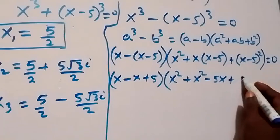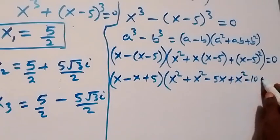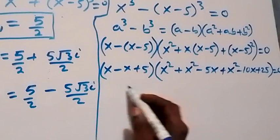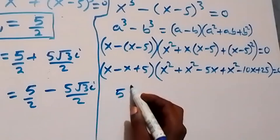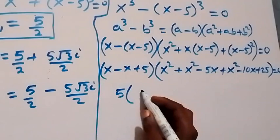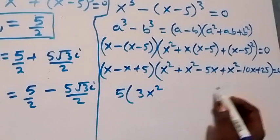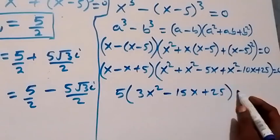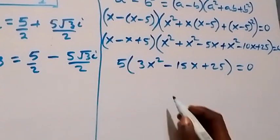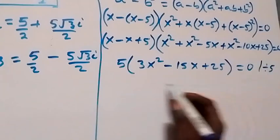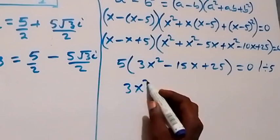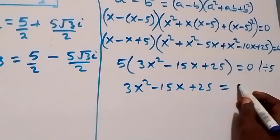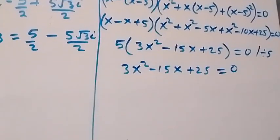Expanding: x minus (x squared minus 10x plus 25), close bracket, equals 0. Simplifying: x minus x cancels, leaving 5. Inside the remaining bracket, x squared plus x squared plus x squared gives 3x squared, minus 5x minus 10x gives minus 15x, plus 25. So we have 5 times (3x squared minus 15x plus 25) equals 0. Dividing through by 5 gives 3x squared minus 15x plus 5 equals 0.